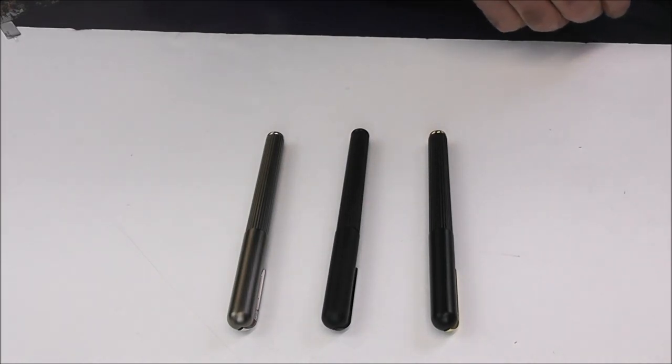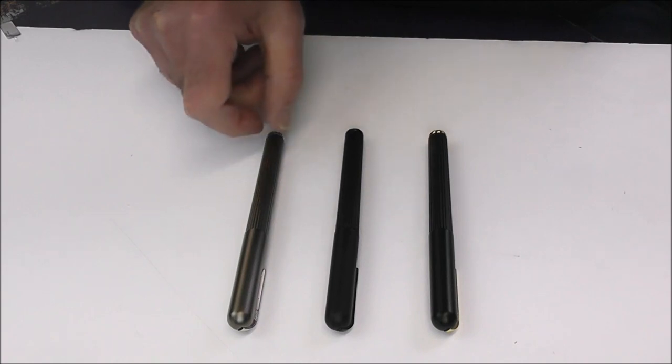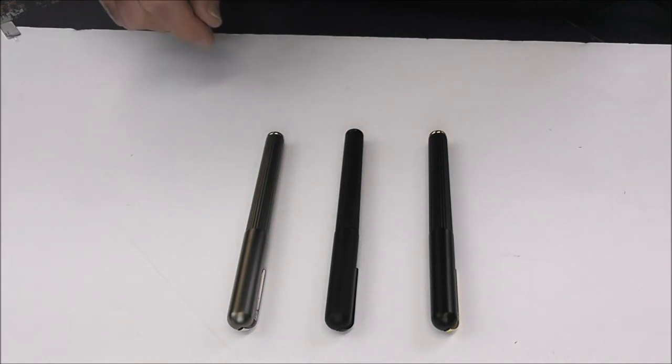Right then, so the Lamy Emporium comes with four writing systems: the fountain pen which we're going to look at today, it also comes as a rollerball, a ballpoint, and a pencil—a very impressive pencil, but we shall talk about that a little bit more in another video.